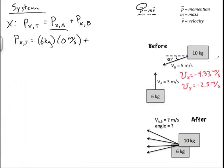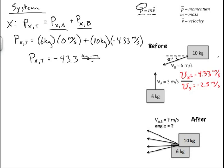Now I can finish the x-direction work. The mass of box B is 10 kilograms multiplied by negative 4.33 meters per second. All of this combined means my system in the x direction has a total momentum of negative 43.3 kilogram meters per second.